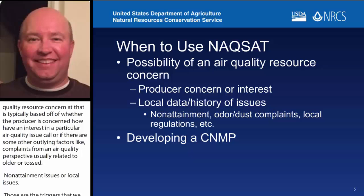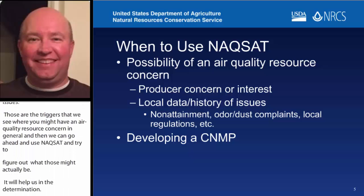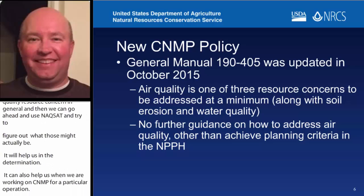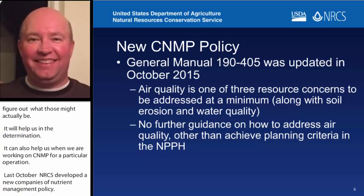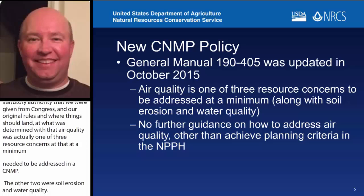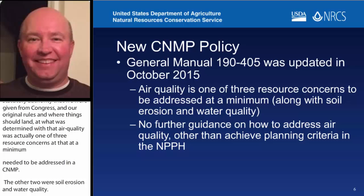NACSAT can also help us when we're working on a CNMP for a particular operation. Last October, NRCS developed a new Comprehensive Nutrient Management Policy. We went back to our roots, looking at the underlying statutory authority given from Congress and our original rules. What was determined is that air quality is actually one of three resource concerns that at a minimum needs to be addressed in a CNMP — the other two being soil erosion and water quality. Given that we now have to address air quality in the CNMP, we needed some guidance and a tool to help us do that, and NACSAT can certainly do that.